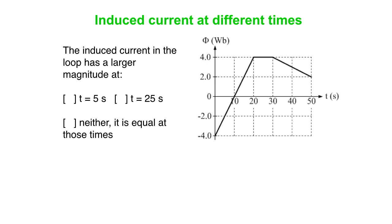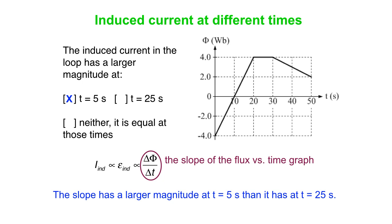So our answer here, again, is that the induced current is proportional to the induced voltage, proportional to the time rate of change of magnetic flux. When you have a flux versus time graph, then all of these things are proportional to the slope of the flux versus time graph. Delta flux over delta t is the slope. So the current is proportional to the slope. In this case, the answer is that at t equals 5 seconds, the induced current is larger.